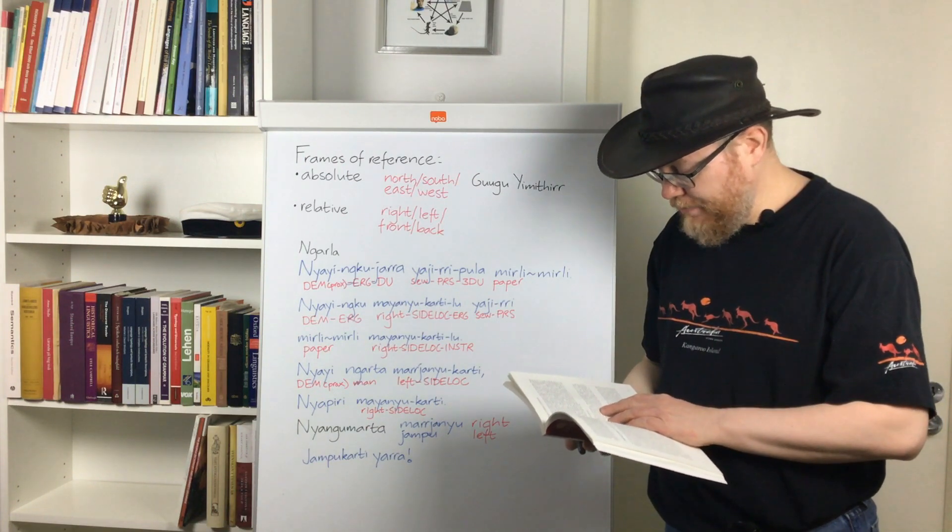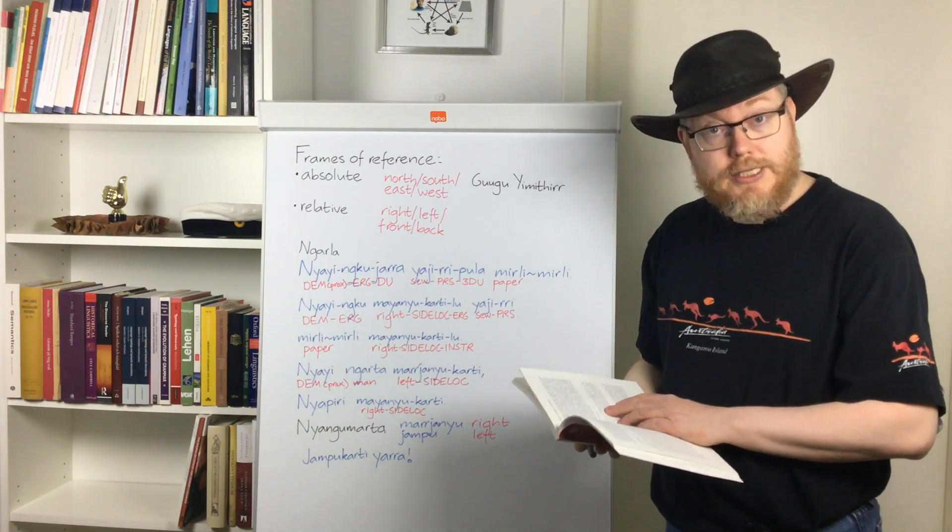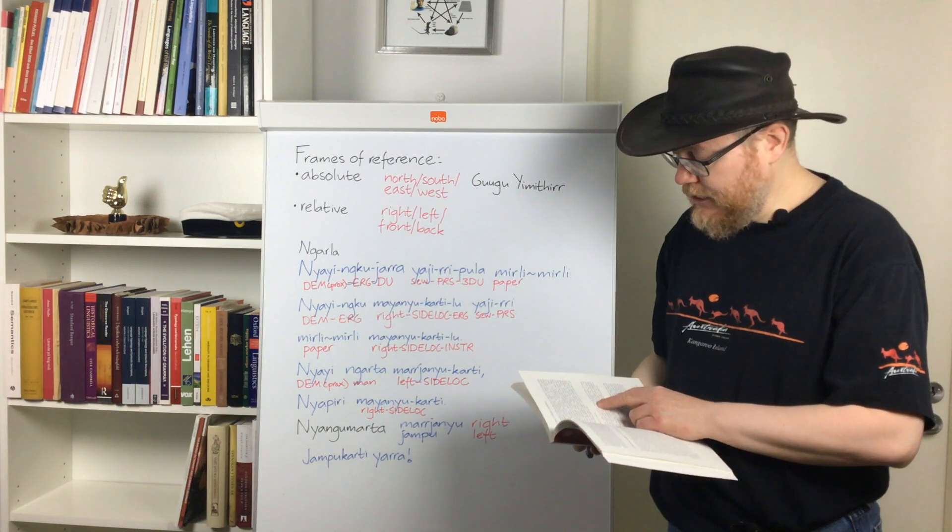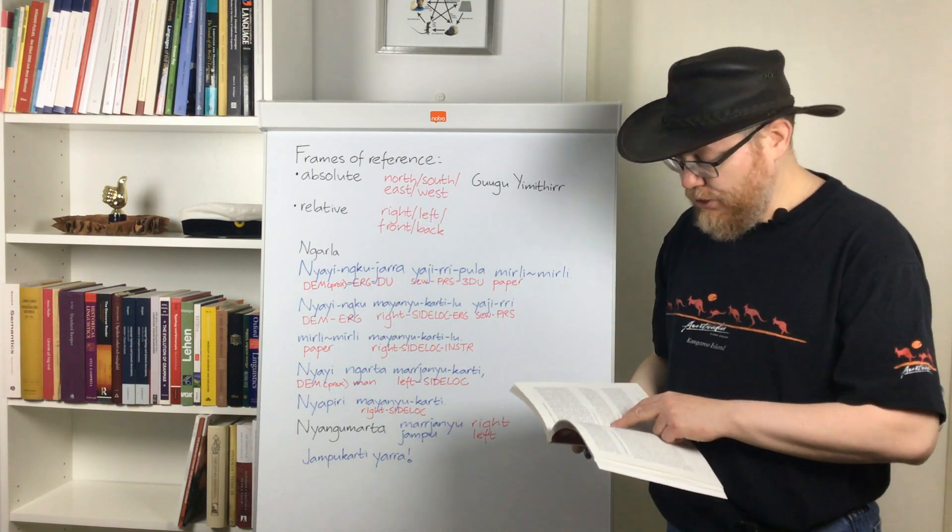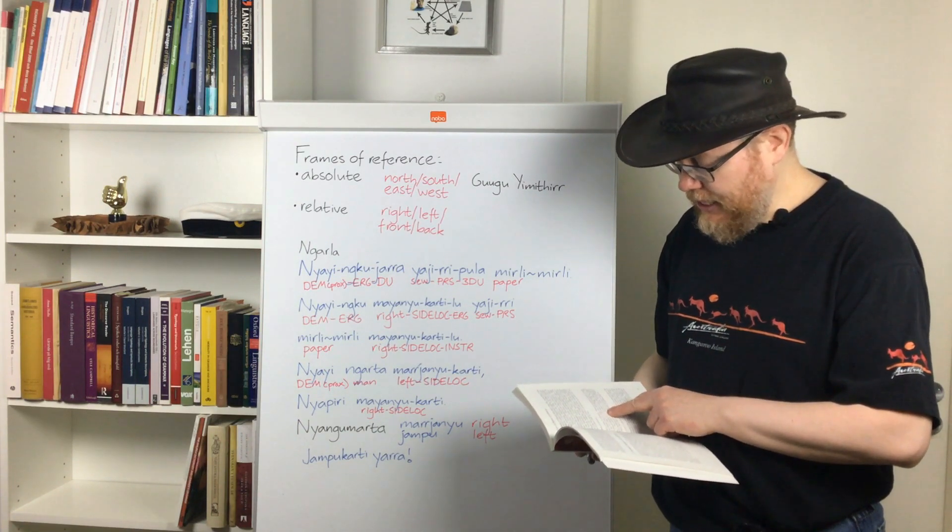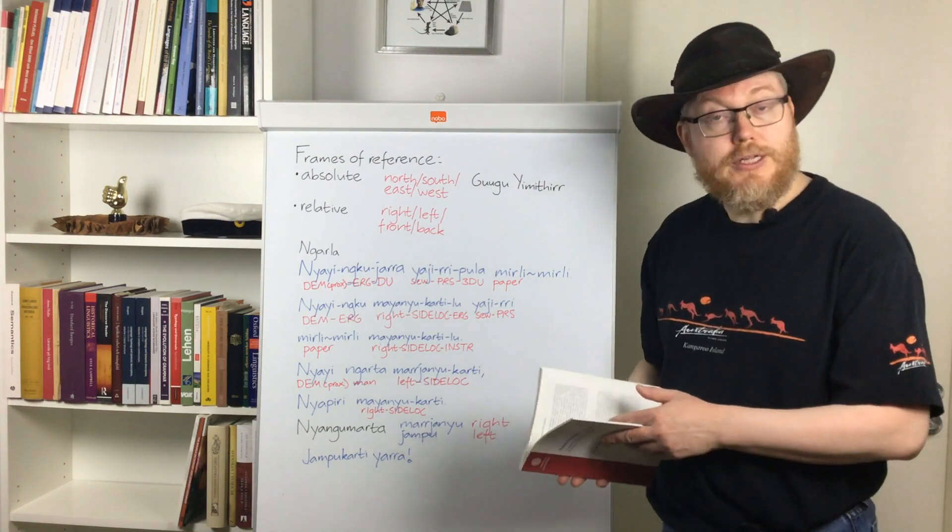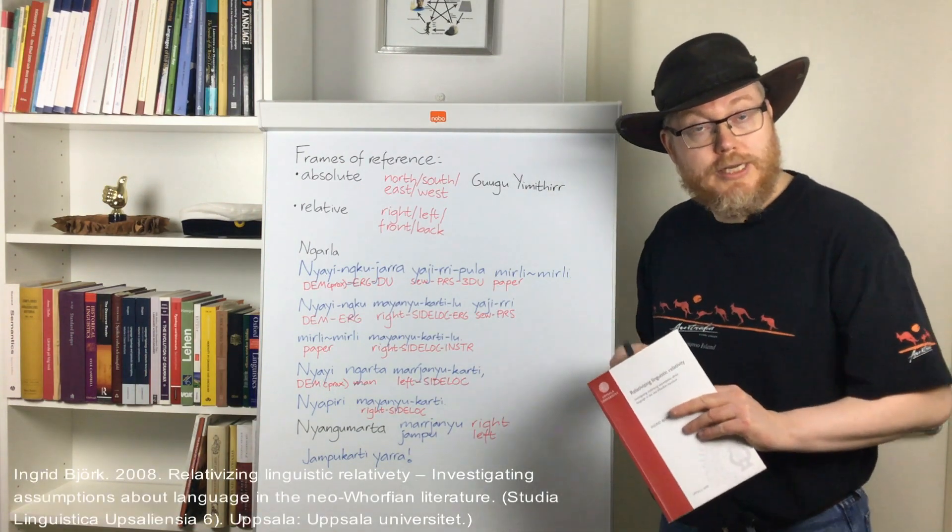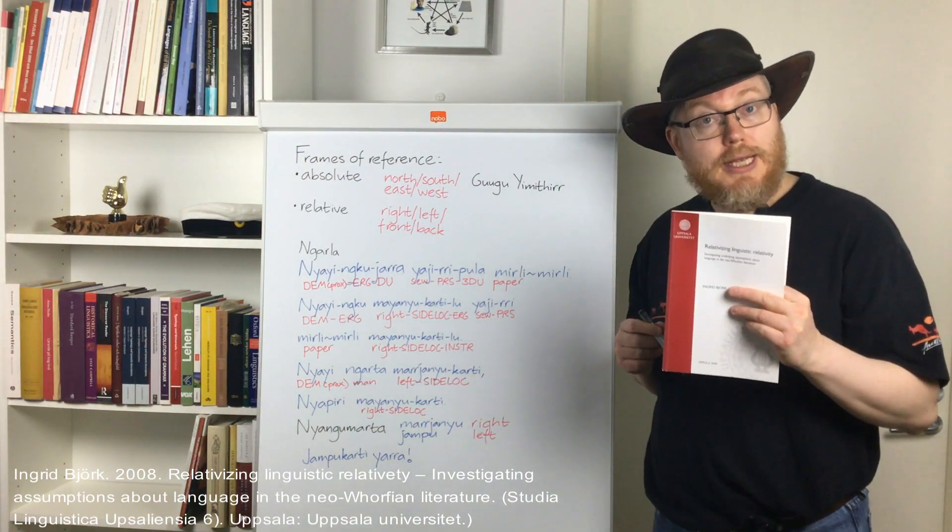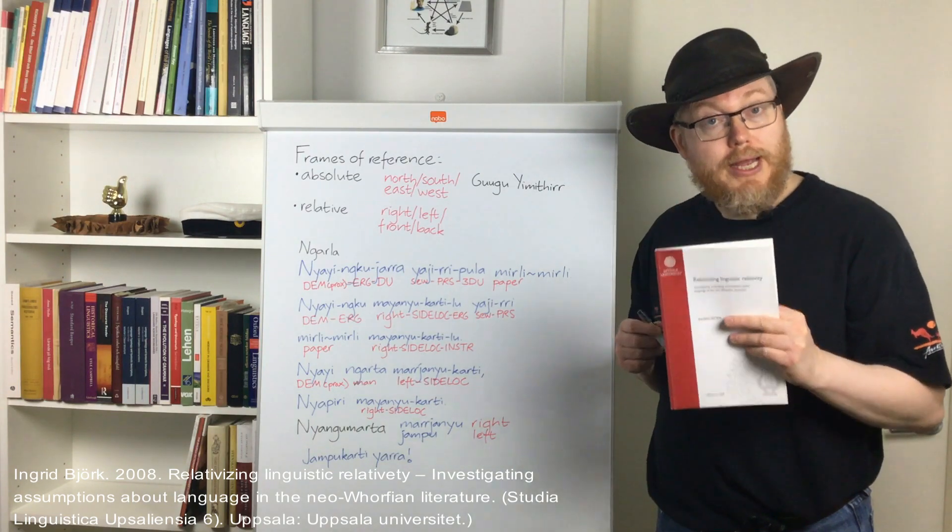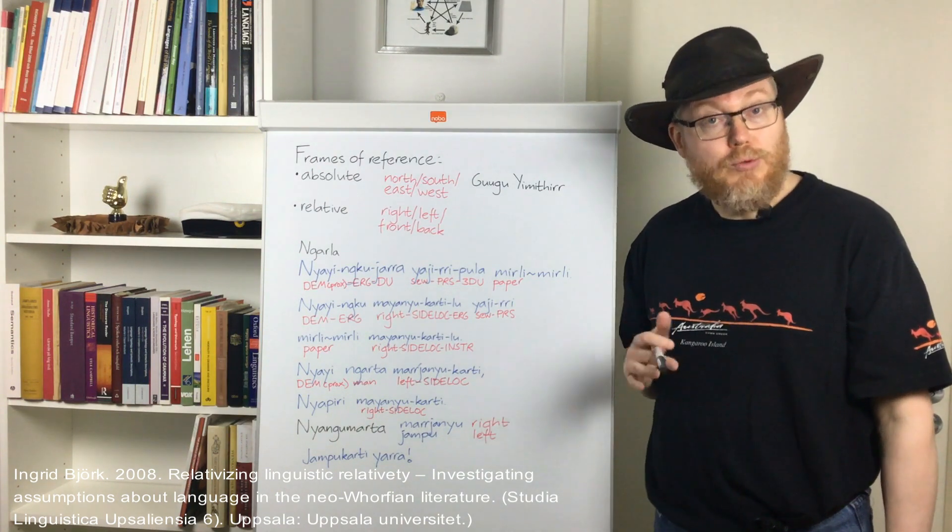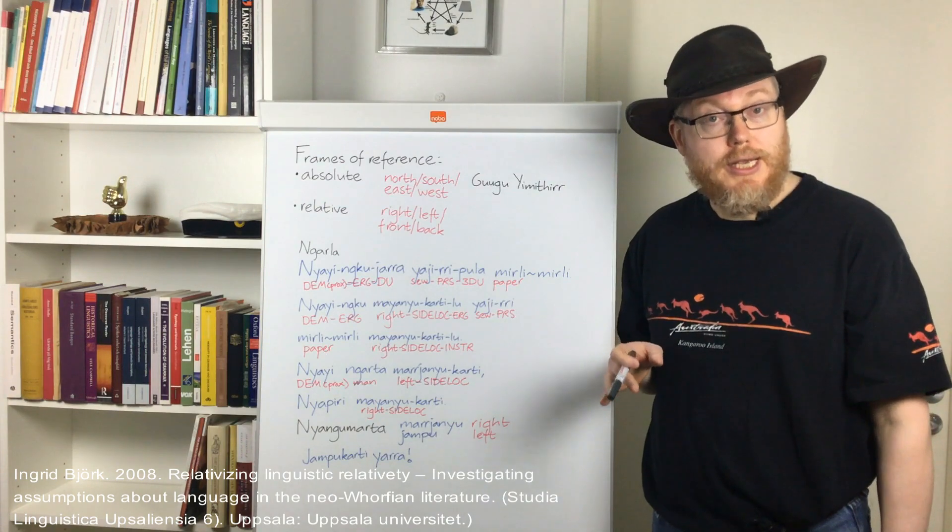Concerning the relative frame of reference, Levinson et al. 2002 wrote the following: Objects are located in terms of viewer-centered coordinates based on body axes as in the ball is to the left of the chair. This here is not Levinson by the way. This as it so happens is the dissertation of a PhD student colleague of mine. That is to say she was a colleague when I was a PhD student.